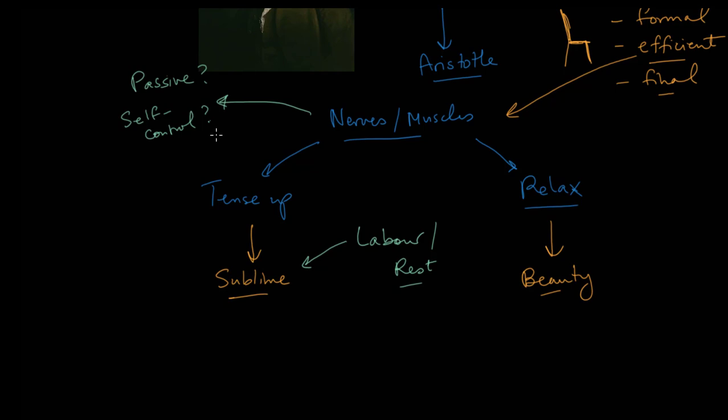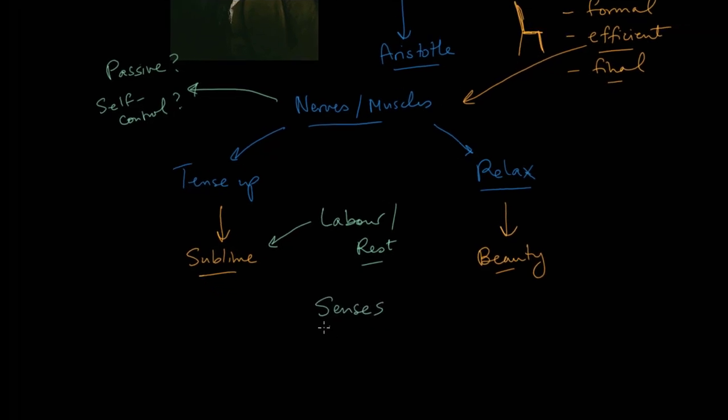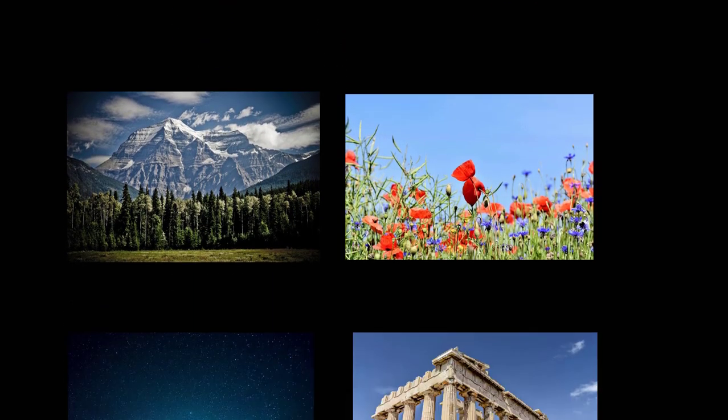We said then that this whole theory is rooted in the senses, and Burke talks about a number of different experiences that the senses have where senses tense up or relax, and I'm going to focus specifically on vision here because he spends most of his time talking about how sight works, and it's fairly easy to explain, I think.